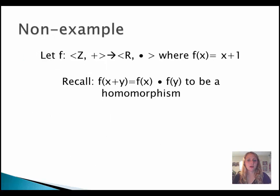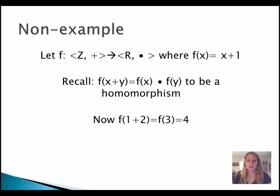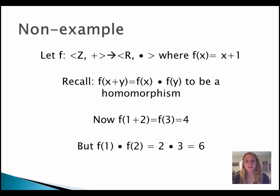Now let's try a non-example. Let f map the integers under addition to the real numbers under multiplication where f(x) = x + 1. We need f(x + y) = f(x) · f(y) for a homomorphism. Testing with f(1 + 2) = f(3) = 4, but f(1) · f(2) = 2 · 3 = 6. Since 4 ≠ 6, this is not a homomorphism.